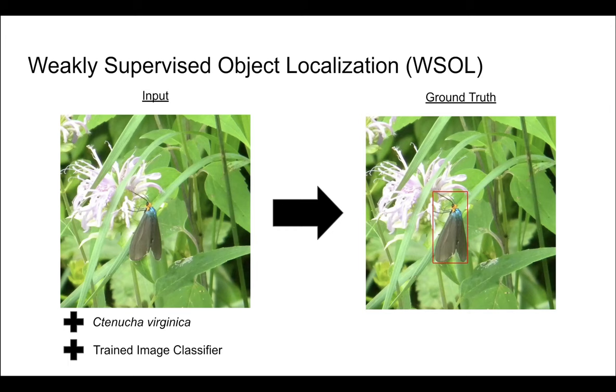Weakly supervised object localization methods aim to sidestep this obstacle by learning to localize objects using only image-level labels at training time.